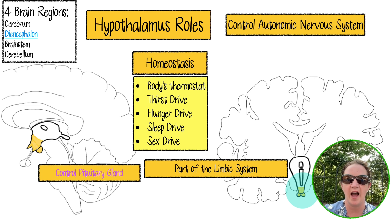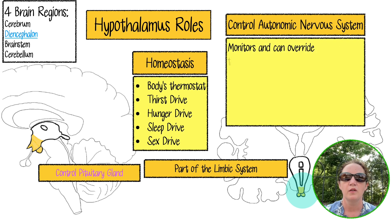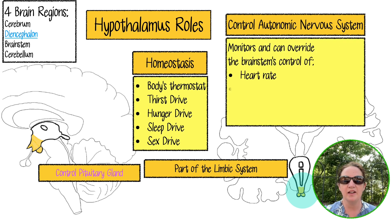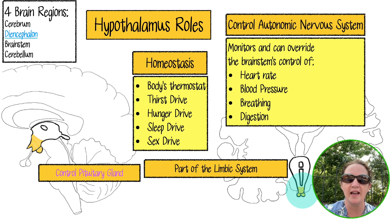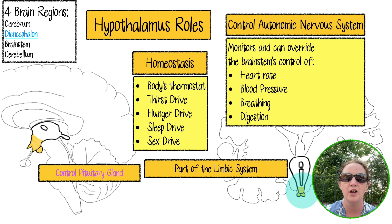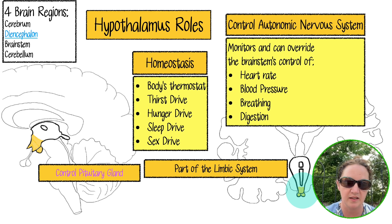Next, the hypothalamus's role in controlling the autonomic nervous system. It can monitor and override the brainstem, which is another brain region. The hypothalamus can override the brainstem's normal control of how fast your heart is going, how high your blood pressure is, how rapidly you're breathing, and some digestion activities.